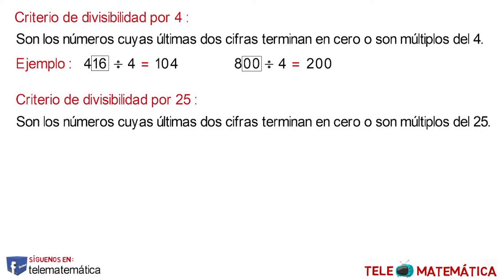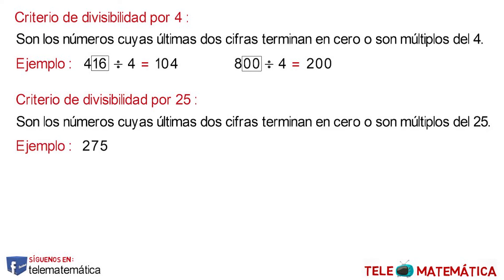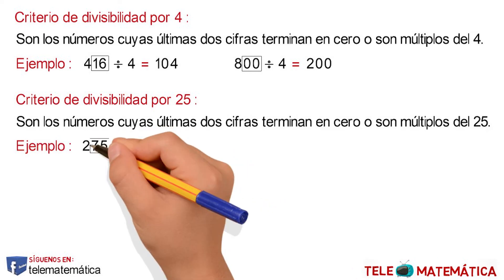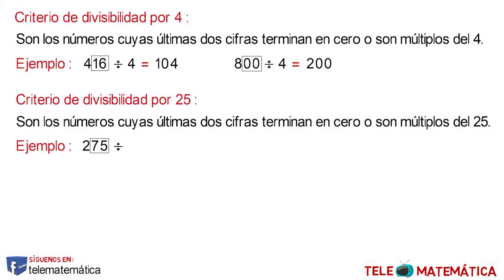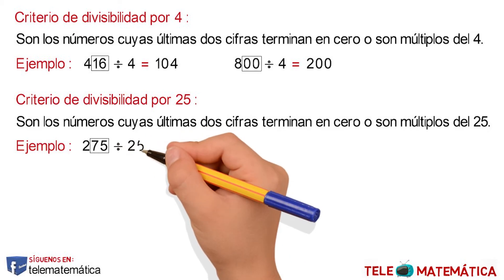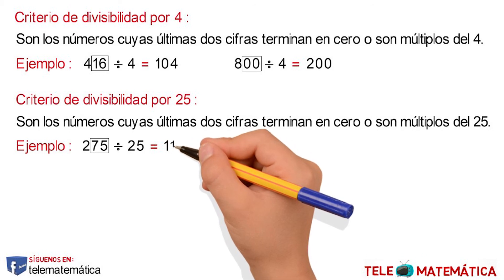For example, the number 275, whose last two numbers are 75, which is a multiple of 25. Then, to prove, we divide this number by 25 and get as a result 11.